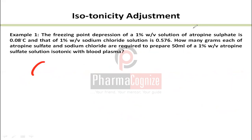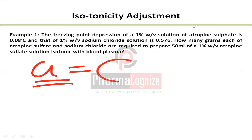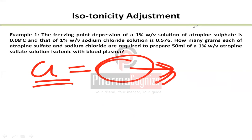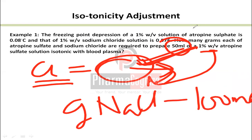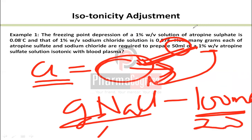Key points to remember: A is the freezing point depression of your drug solution at the final percentage concentration you intend to prepare. B is always 0.576 when using NaCl. The formula gives grams per 100 mL, so scale proportionally — halve for 50 mL, double for 200 mL.